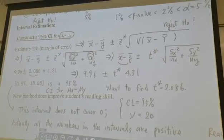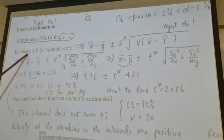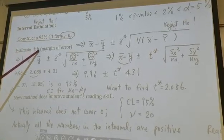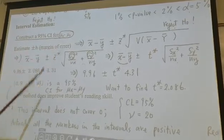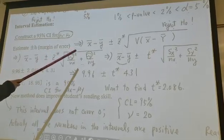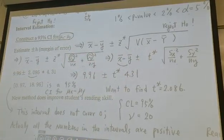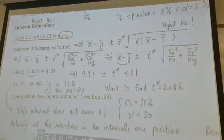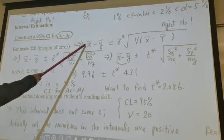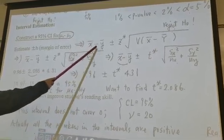As we discussed earlier, it always begins with estimate plus or minus h, where h is margin of error. In our situation, our estimator is x̄ minus ȳ and the observation of x̄ minus ȳ we use lowercase x̄ minus ȳ. That means this is an estimate, an observation.